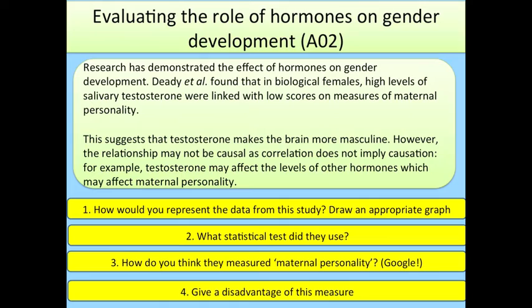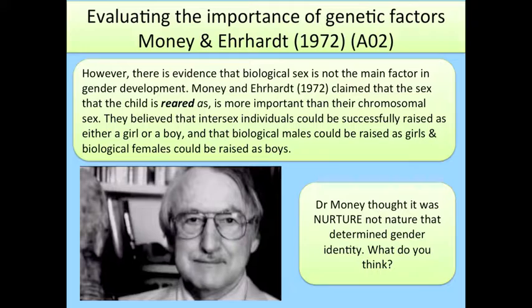Research has demonstrated the effect of hormones on gender development. Dedi et al. found that in biological females, high levels of salivary testosterone were linked with low scores on measures of maternal personality. This suggests that testosterone makes the brain more masculine. However, the relationship may not be causal, as correlation does not imply causation. For example, testosterone may affect the levels of other hormones, which may in turn affect maternal personality.